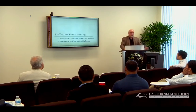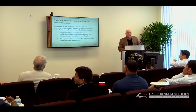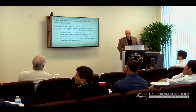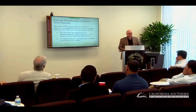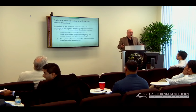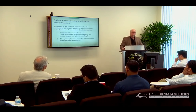The reason for the difficulty in the family making the transition is an underlying narcissistic personality structure in one of the parents. There are two features about narcissism that make this transition difficult. First, the narcissist is characterologically unable to experience sadness and grief. Second is the splitting dynamic that occurs with both narcissistic and borderline personality dynamics.